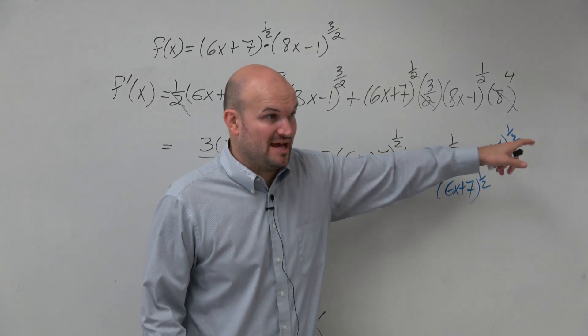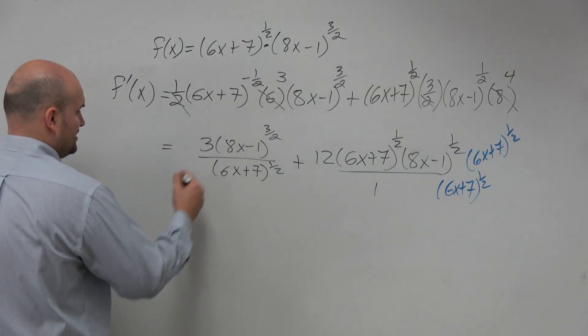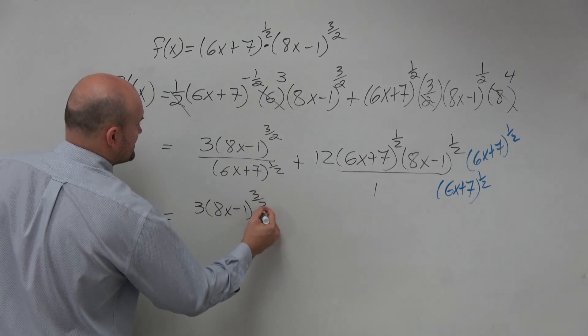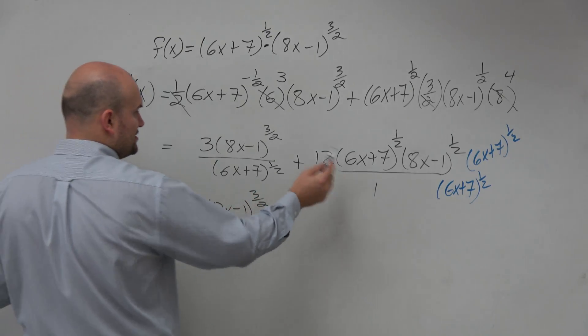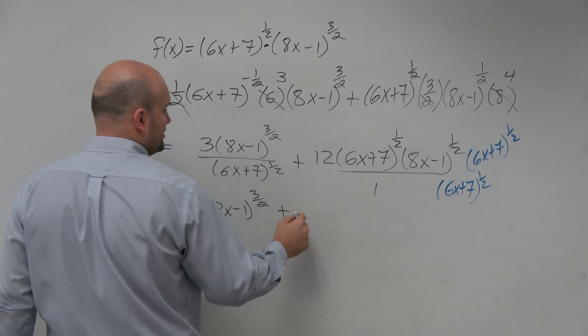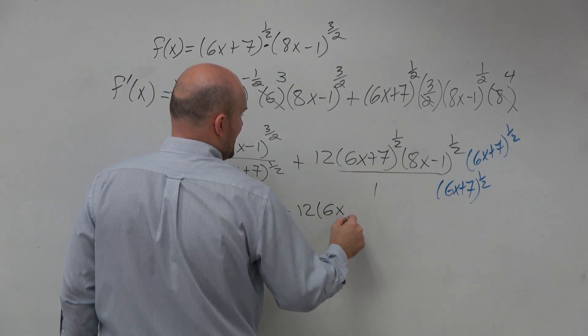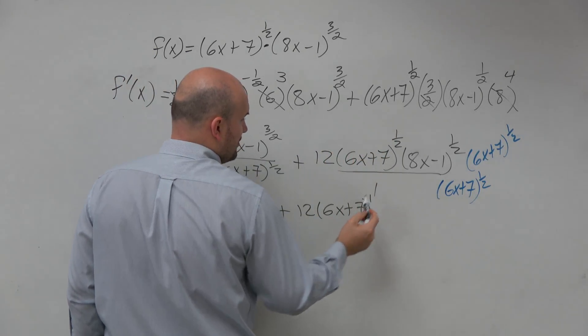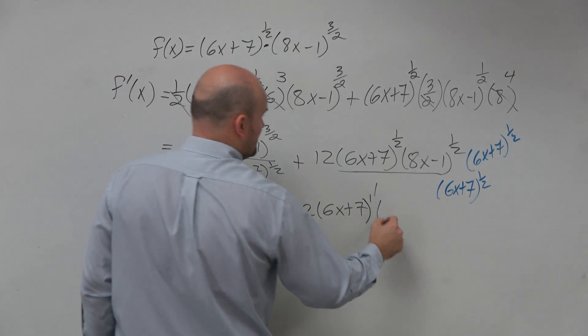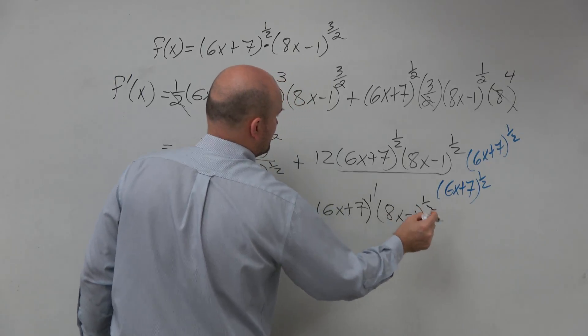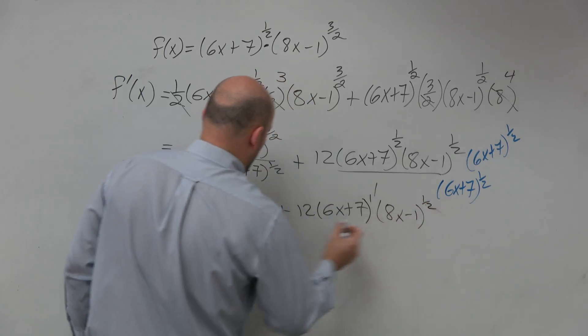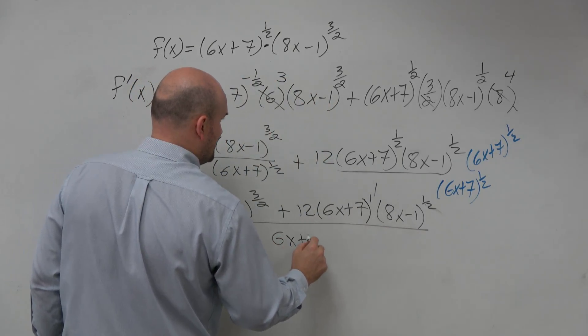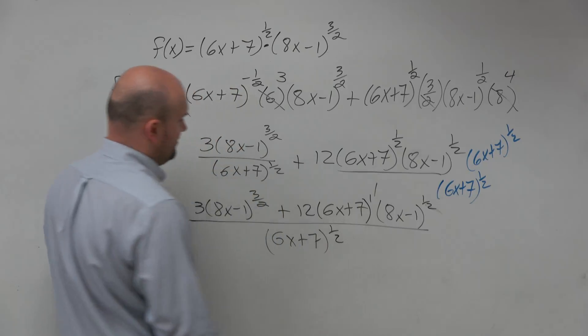And then now, here, we can multiply these and add the powers, correct? Because those are the same base. So nothing has really changed over here. 3 times 8x minus 1 to the 3/2. Actually, I'm going to combine all my like terms here. Plus, still have a 12. This now becomes 6x plus 7 to the 1/2 plus 1/2, which is just the first power, but it's still inside parentheses, times 8x minus 1 to the 1/2, all over my common denominator of 6x plus 7 raised to the 1/2.